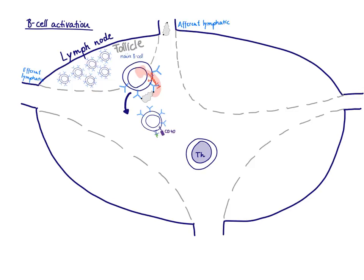The B-cell knows that only if it presents its antigen on MHC class 2 does it have a chance to get T-helper help. The B-cell needs T-helper help to get Signal 2. The T-helper cell is not going to move to the B-cell area to help activate the B-cells — no, the B-cell needs to move to the paracortex to get T-helper help.